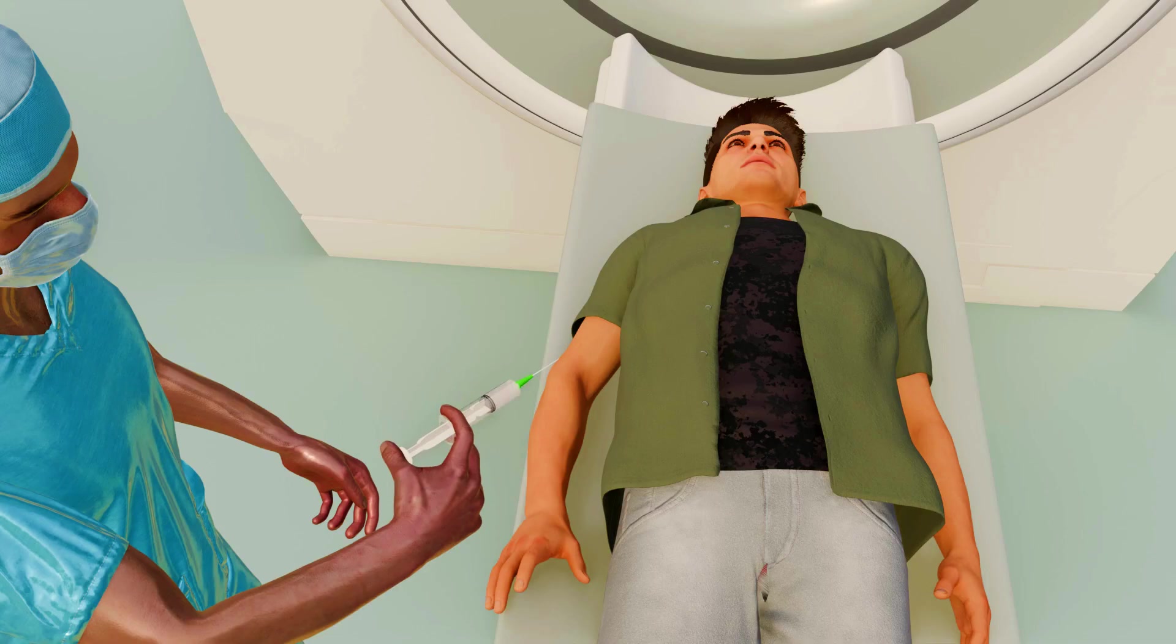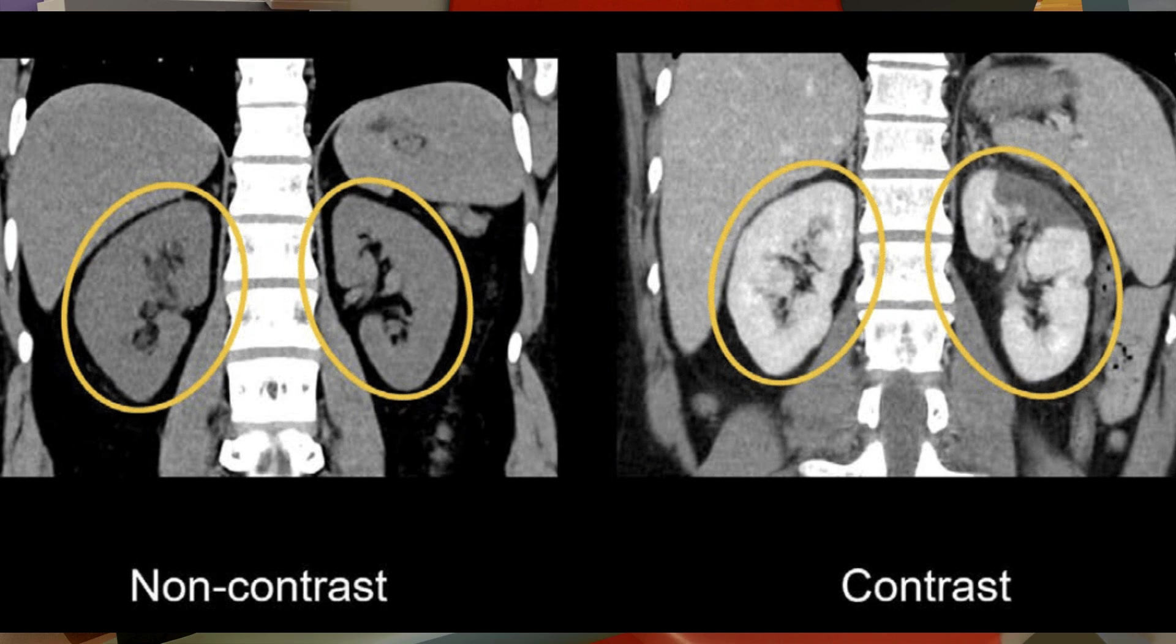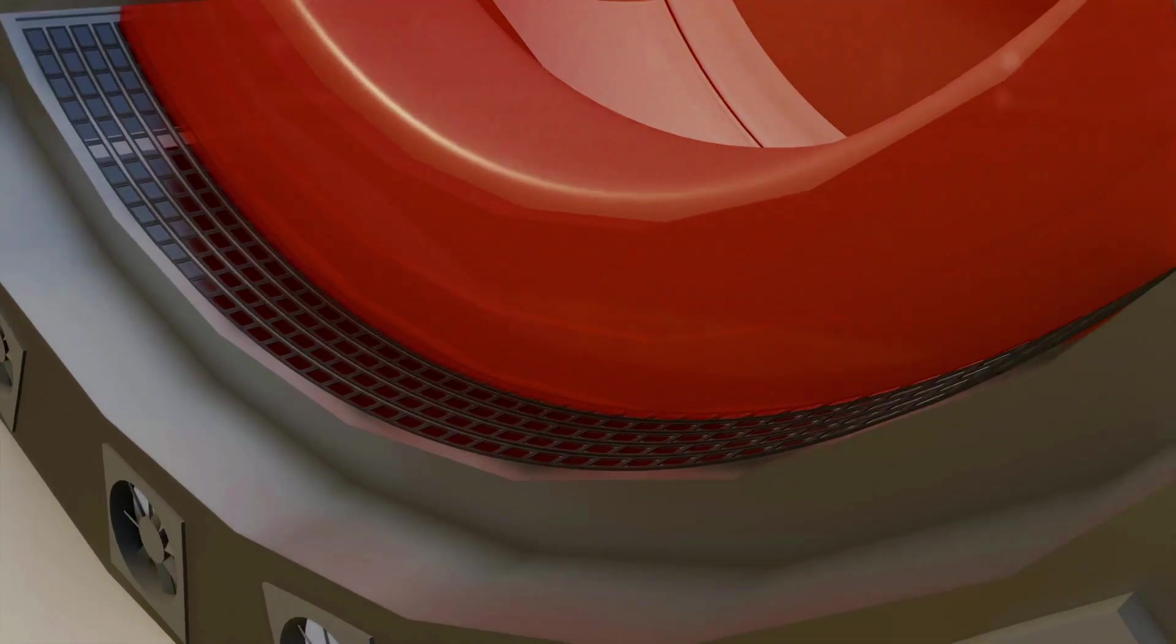When a contrast agent is injected into the body, it prevents the X-rays from passing through the blood clot. The contrast agent absorbs the X-rays, blocking their further passage. The X-rays that cross the brain are detected by the detector on the opposite side.